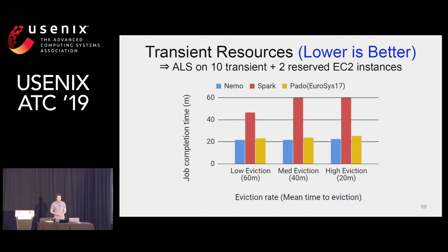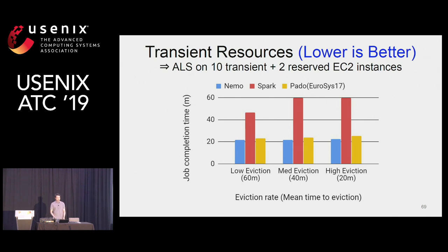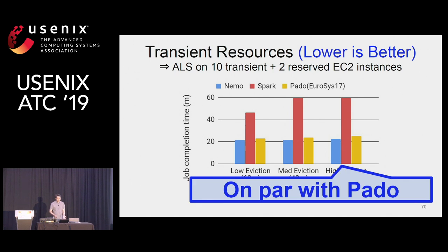For transient resources, we ran a machine learning algorithm on 10 transient plus 2 reserved resources. Y-axis is job completion time and X-axis is eviction rate. As eviction rate increases, Spark suffers from heavy recomputations of evicted data, whereas Nemo and PADO handle evictions gracefully. Nemo is on par with PADO, which is specialized for transient resources, and Nemo is optimized with the transient resource pass.